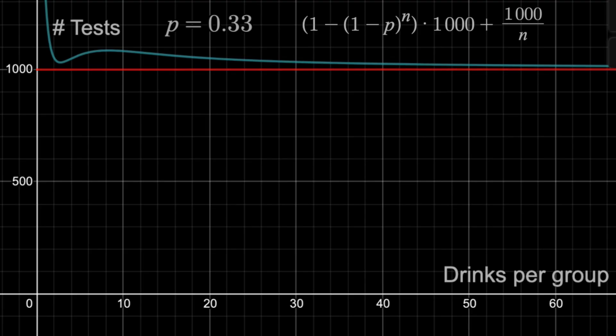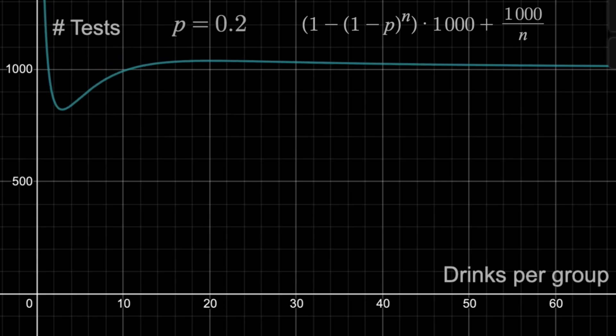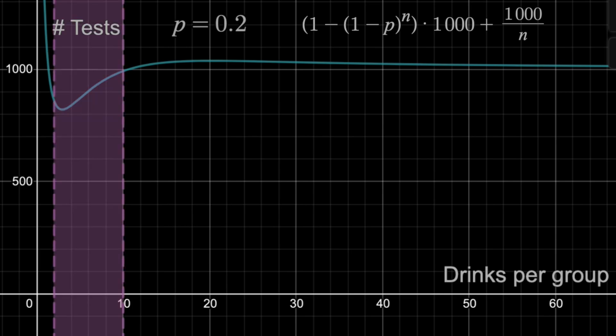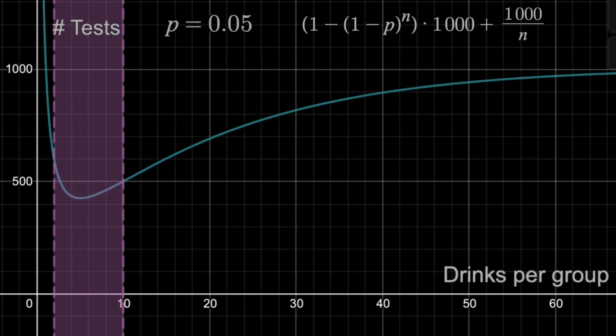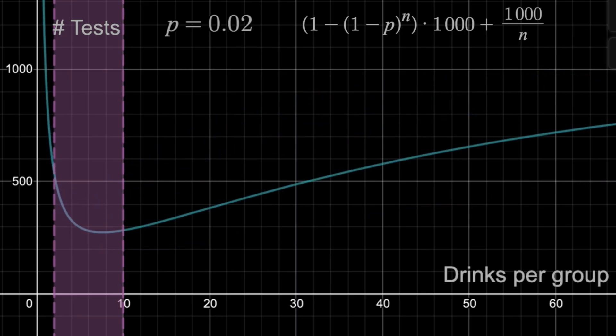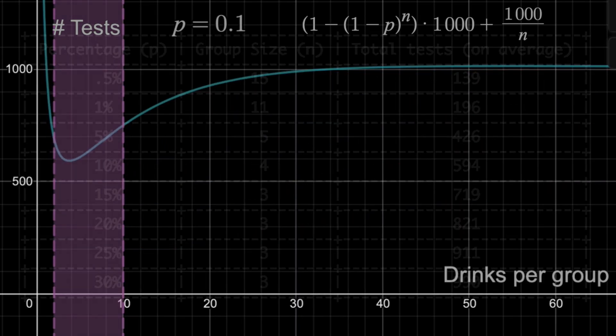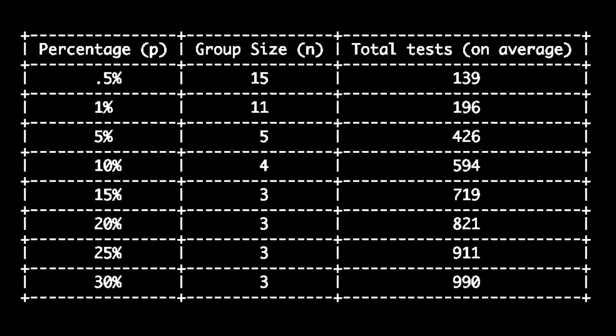But if you at least knew that the percentage of poisoned drinks was less than 20%, let's say, you'll see if we split the drinks into groups of anything between like 2 and 10 at first, the number of tests, on average, will be less than 1,000. Here's a table of some other percentages, and the optimal way to split the 1,000 drinks into groups.